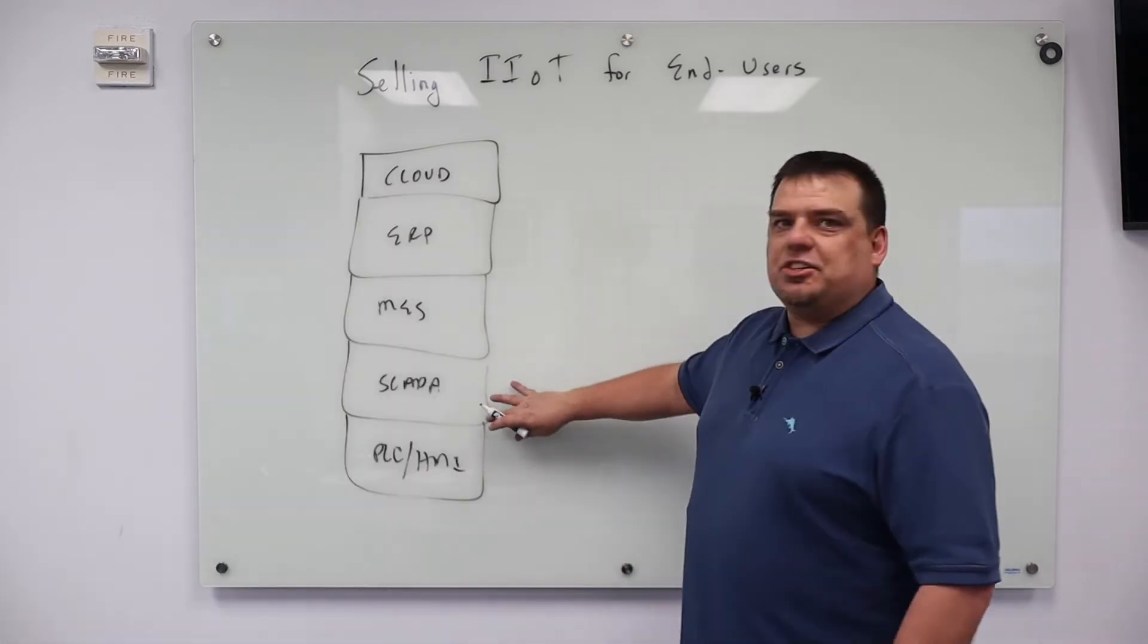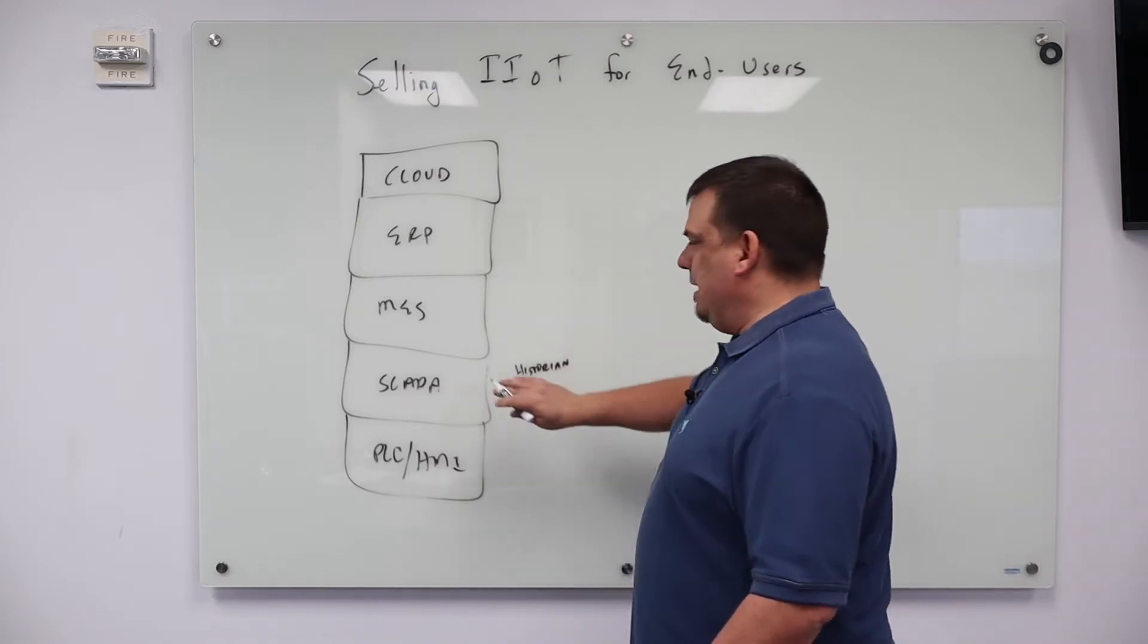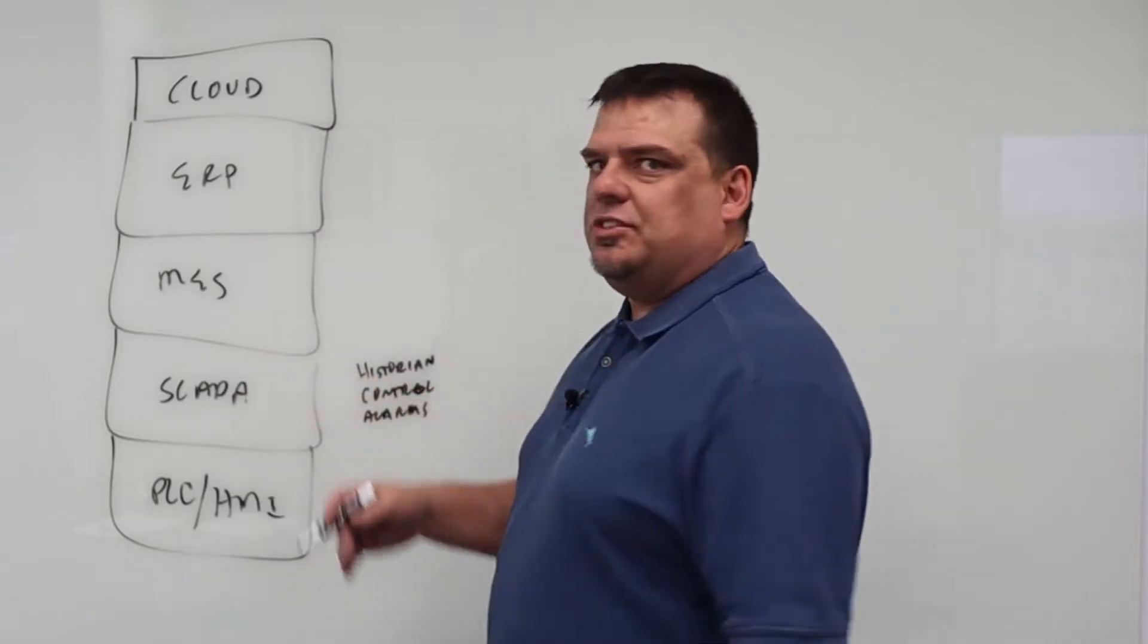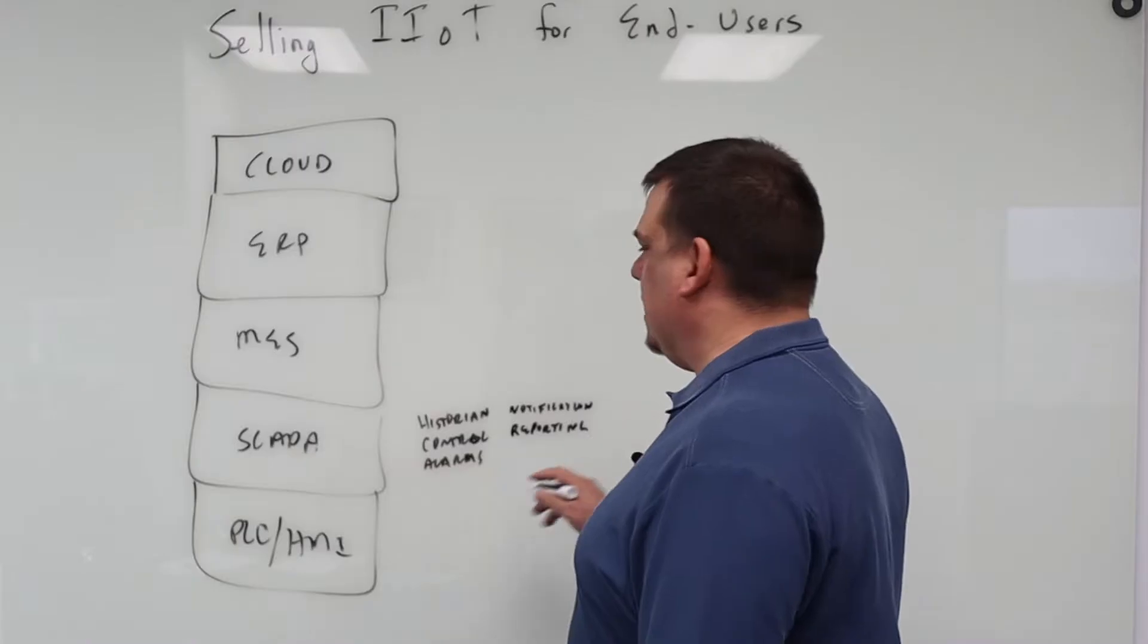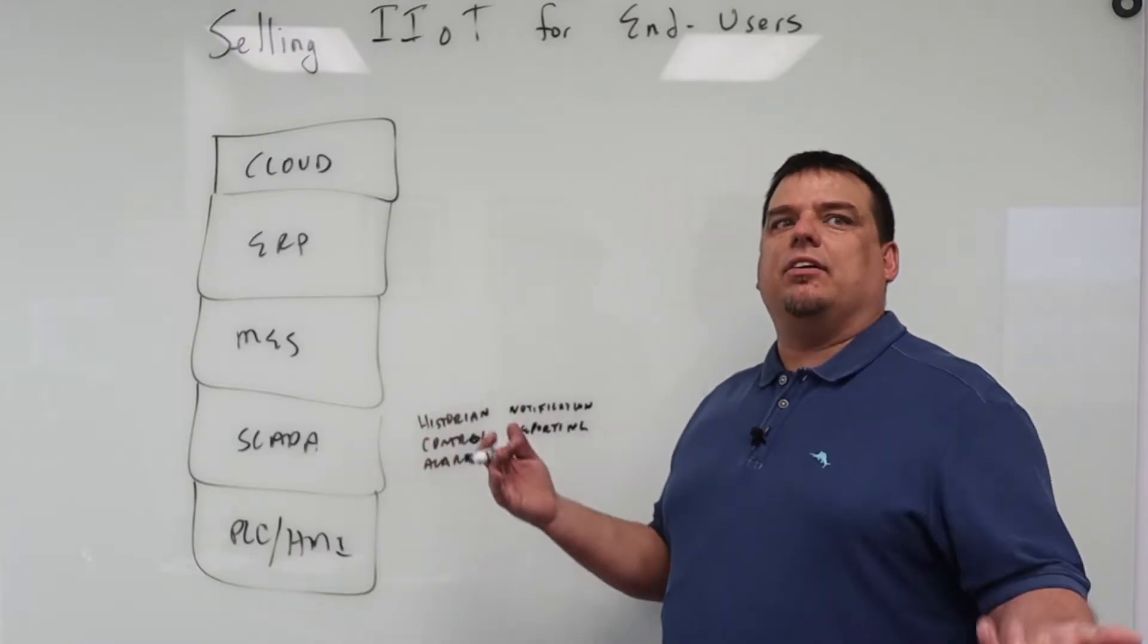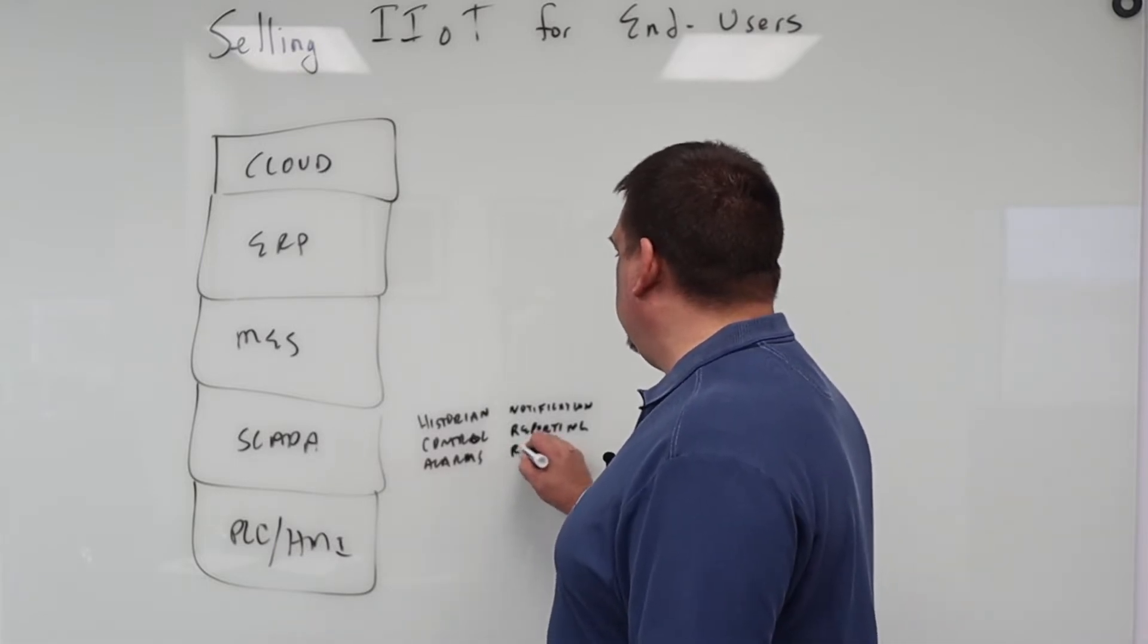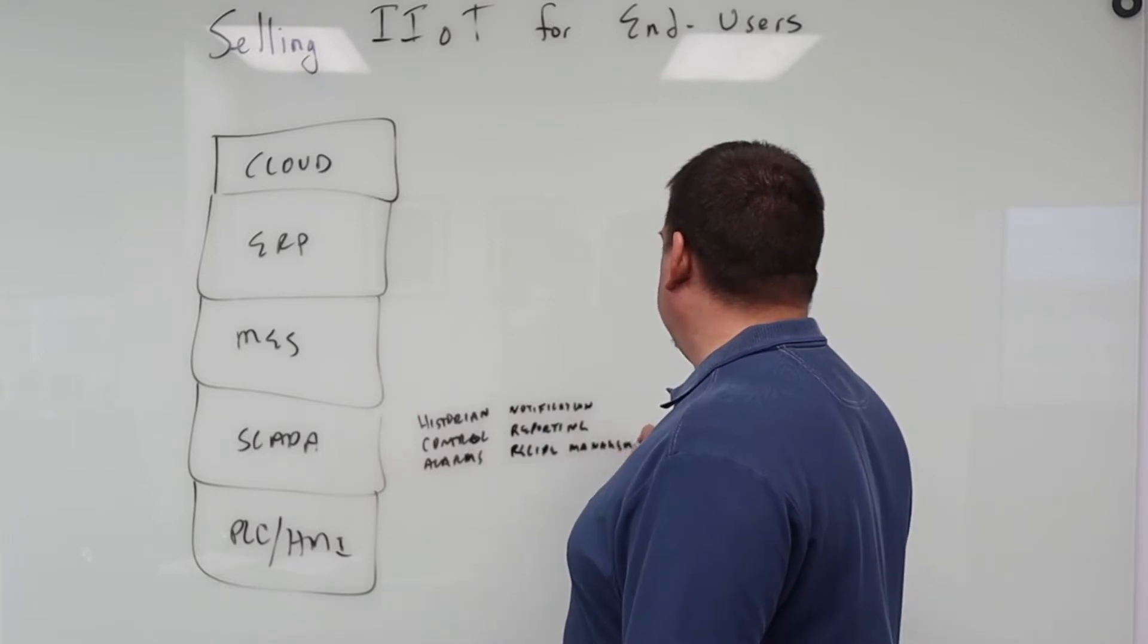So one of the features of SCADA is historian. So you have SCADA. You have process control, you have alarms. What other features do you have in SCADA? You have notification, you have reporting. What else? What other functionality does SCADA? Is there any type of database applications like recipe management? So we could do recipe, which by the way, most people think that's up here. It's not. It's a SCADA functionality.